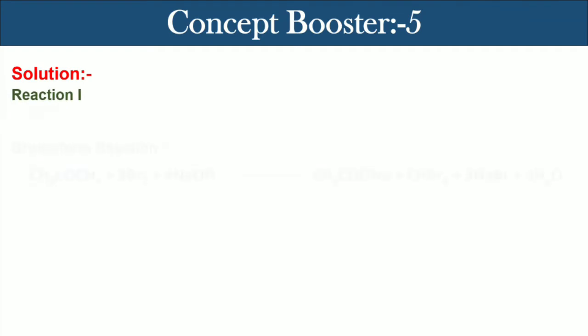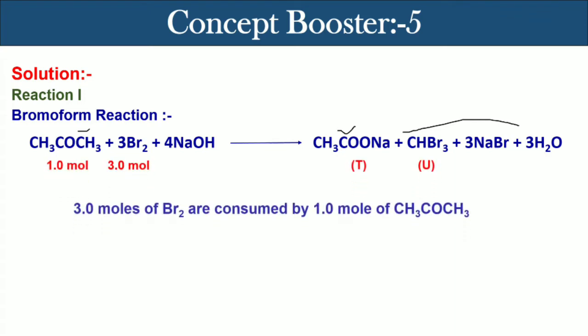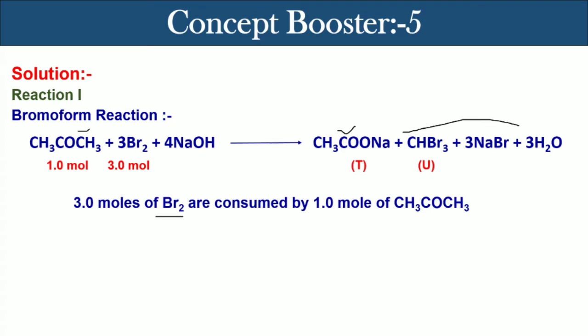Reaction 1 is basically the bromoform reaction where one mole of acetone is treated with three moles of bromine and four moles of sodium hydroxide. Acetone is converted to sodium salt of acetic acid along with CHBr3, sodium bromide, and water molecules. The stoichiometry reveals that three moles of Br2 are consumed by one mole of acetone.